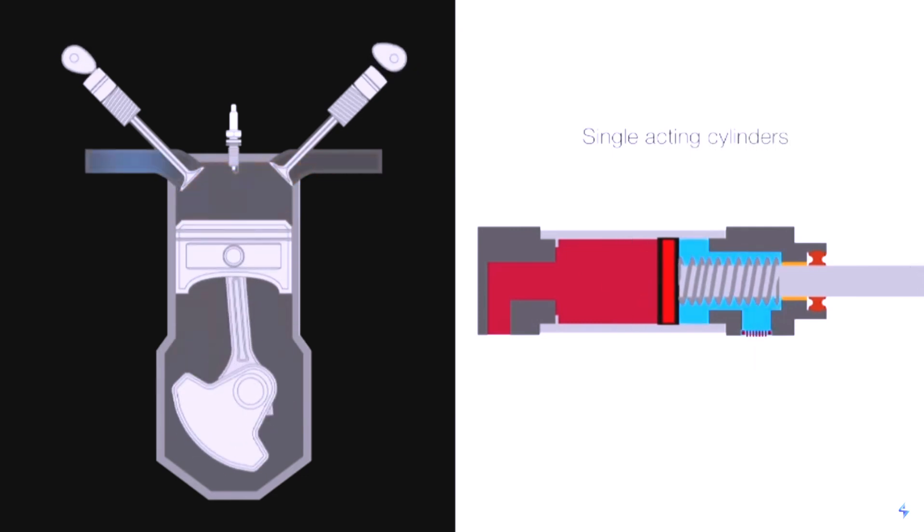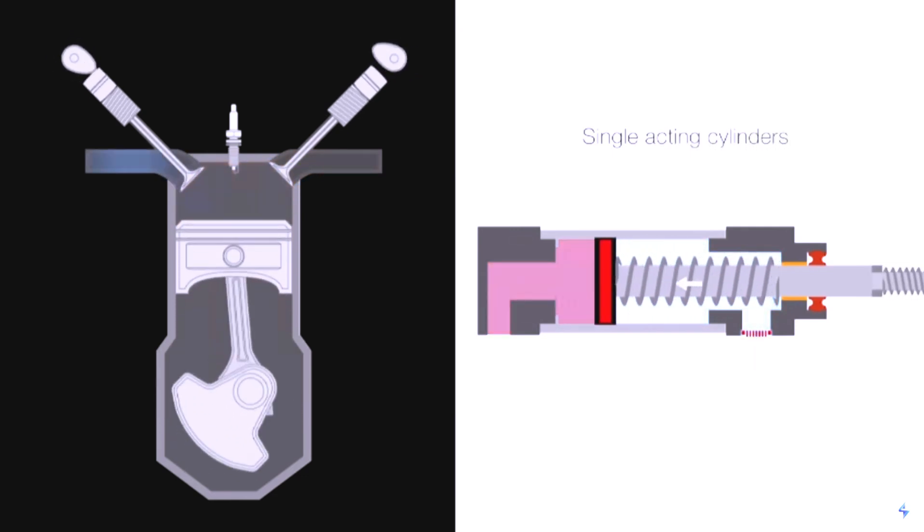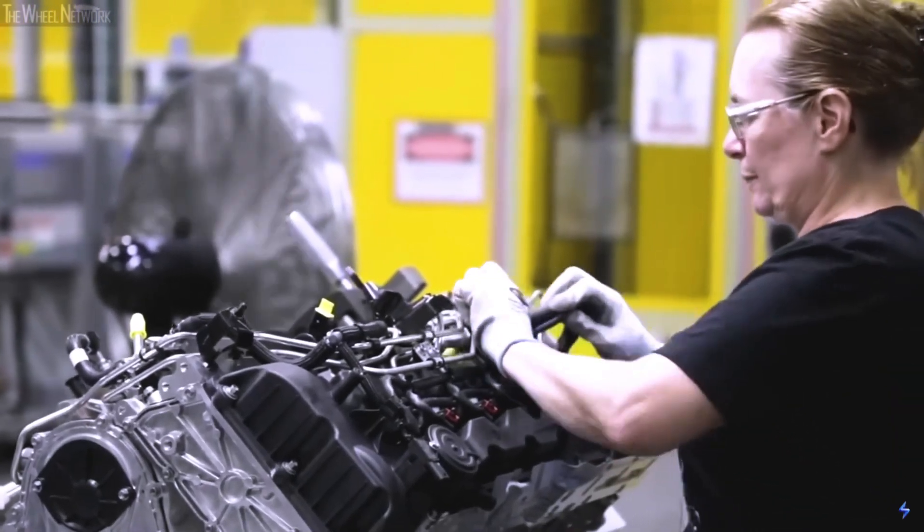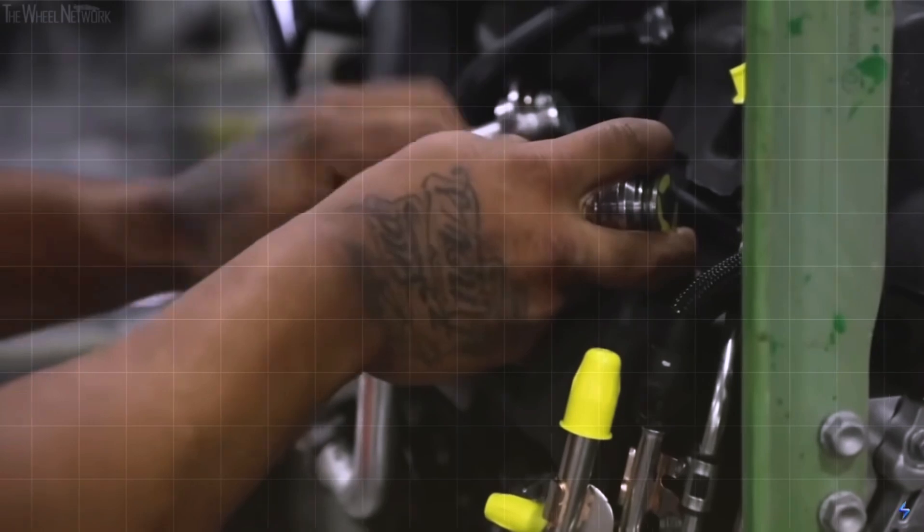This similarity to internal combustion engines allows for a wide range of technical solutions, which is one of the factors that drew GM towards this concept. But what are the benefits of compressed air engines compared to EVs and ICE vehicles?